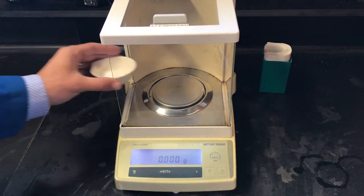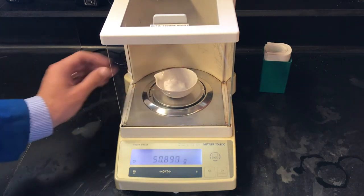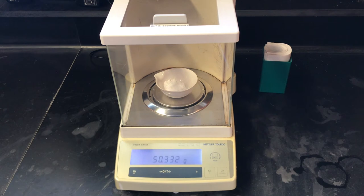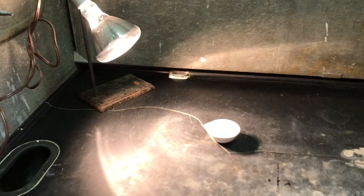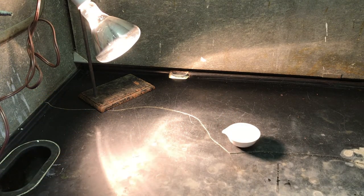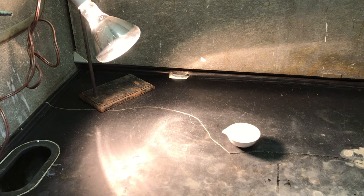We can now acquire the mass of our wet alum and our evaporating dish, which comes out to be 50.332 grams. We'll now place our sample of wet alum under a heat lamp, ensuring that it's not too close to the heat lamp, which might damage our product.